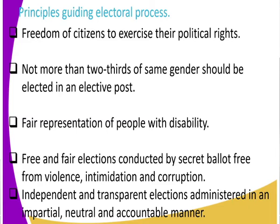Also, there is fair representation of people with disability, who are also represented in the constitution. Additionally, free and fair elections must be conducted, separate from violence, intimidation, and corruption. There is a secret ballot — you go to your ballot booth and cast your vote in secrecy, so no one can vote for another. Elections must also be independent and transparent, administered in an impartial, neutral, and accountable manner.